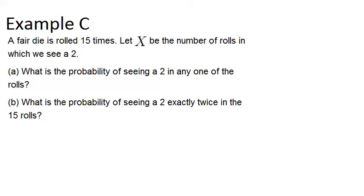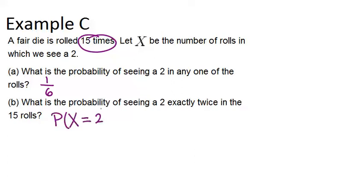Example C is a similar question to Example B. A fair die is rolled 15 times. Let X be the number of rolls in which we see a 2. Again, we're thinking about getting a 2 — our success — or not a 2 — our failure — and this time we're rolling the die 15 times. Just like before, the probability of seeing a 2 in general is 1/6, because the die has 6 numbers on it. What's the probability of seeing a 2 exactly twice in the 15 rolls? We're looking for the probability that X equals 2.